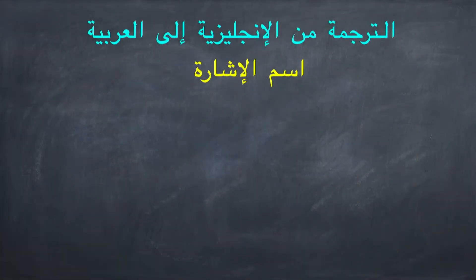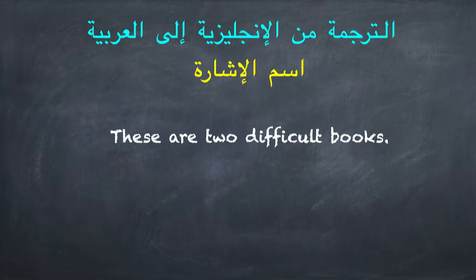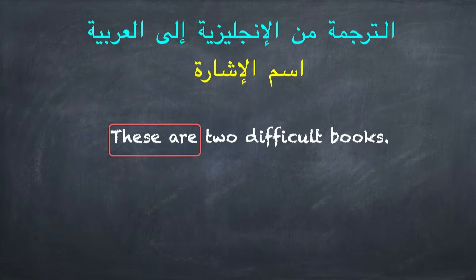تعالوا أعزائي نترجم جملة تبدأ باسم إشارة: 'These are two difficult books'. 'These are' = هذان. انتبهوا جيداً أن اسم الإشارة هنا مذكر ومثنى. 'Two difficult books' = كتابان صعبان.